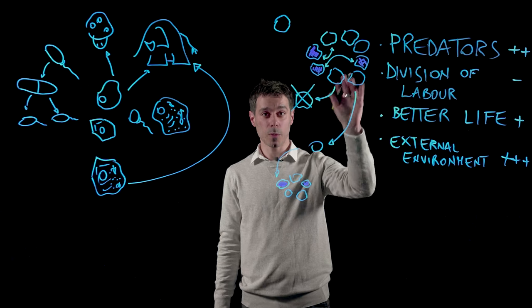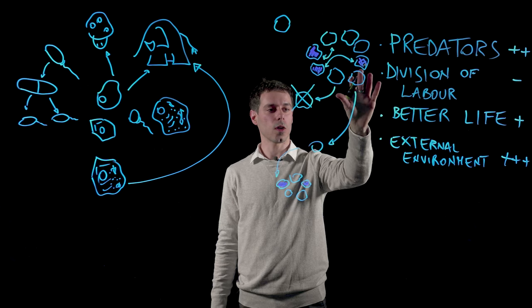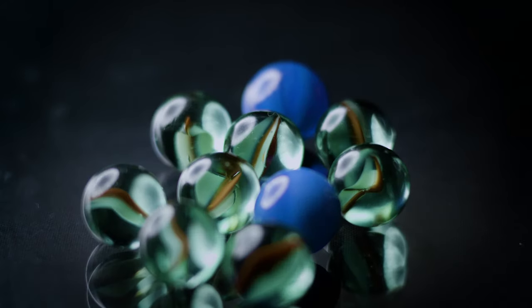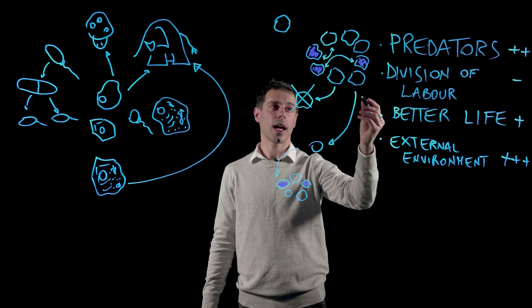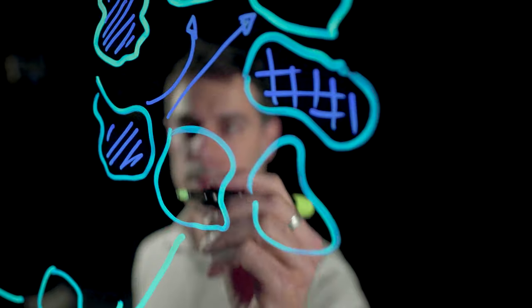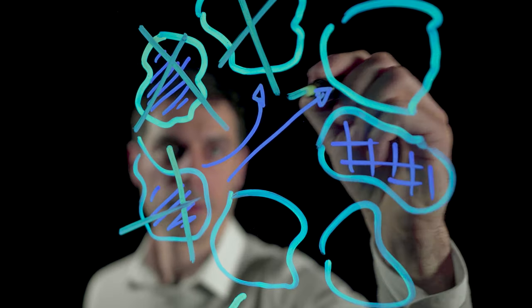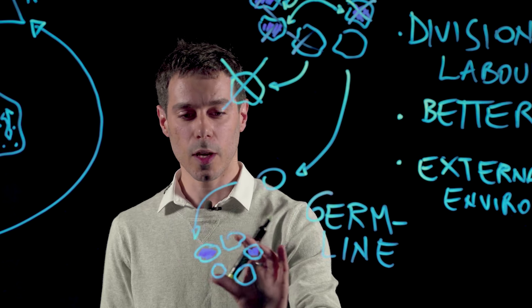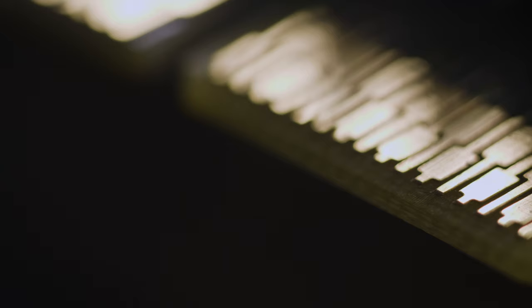And finally, an extreme form of specialization is when a single cell from the colony is able to form a whole new colony by itself. All the other cells in the colony from which this cell comes from contribute to this cell's survival, but ultimately, they die out. At this point, no individual cells can reproduce on its own anymore. And this means that it is more important for the whole group to survive rather than for any single individual.